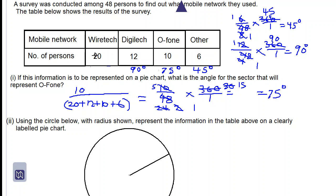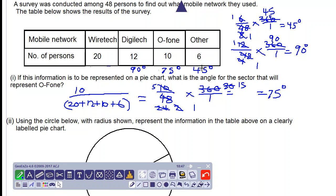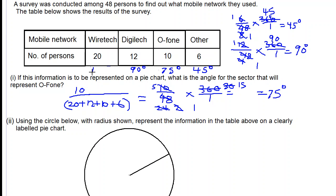And the last one is Wiretech. So we add 45 and 75 and 90, and then we subtract that from 360 degrees. So we get 150 degrees for Wiretech. The sum of these angles is 360 degrees.